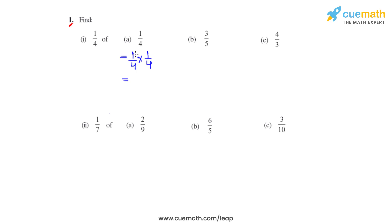To get the product, we multiply the numerators to each other, we get 1, and denominators to each other, we get 16. So 1/4 of 1/4 is 1 over 16.